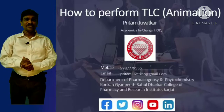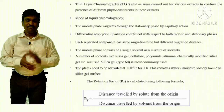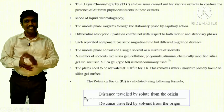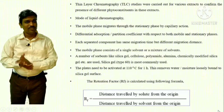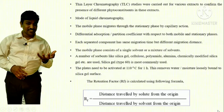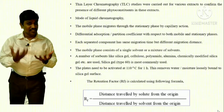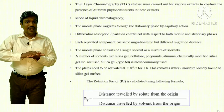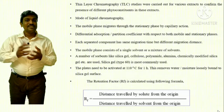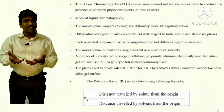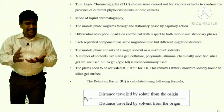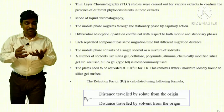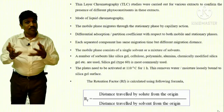When we learn about thin layer chromatography by animation, firstly we have to understand thin layer chromatography. Thin layer chromatography is a specific mode of liquid chromatography in which there is one stationary phase and one liquid phase. The stationary phase is a sorbent layer that may be silica gel, cellulose, or polyamide, and it is absorbed on an inert plate material — aluminum, glass, or plastic.